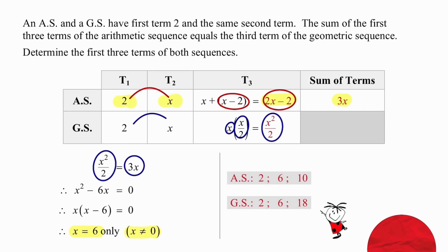Knowing that the second term is 6, we can now generate the third term in each sequence. So we have 2, 6 — the common difference is 4, so the third term is 10. In the geometric sequence, we also have 2 and 6; the ratio is 3, and so the third term is 18.